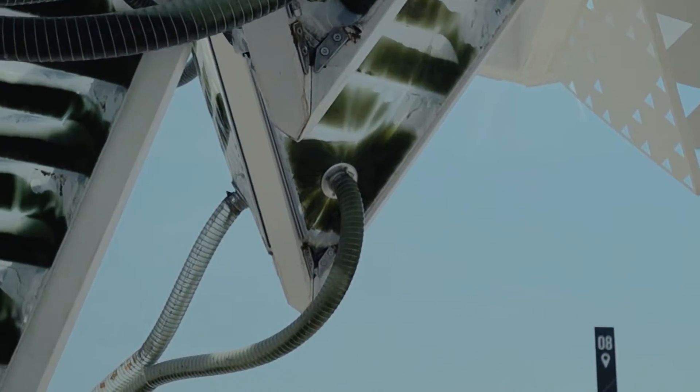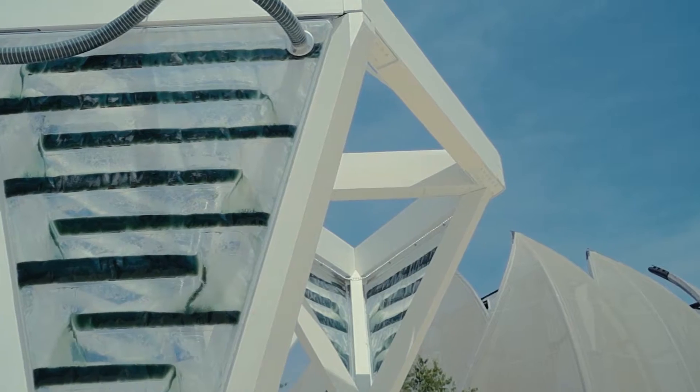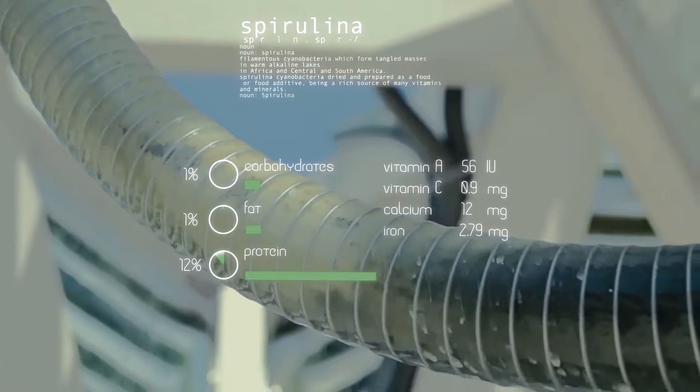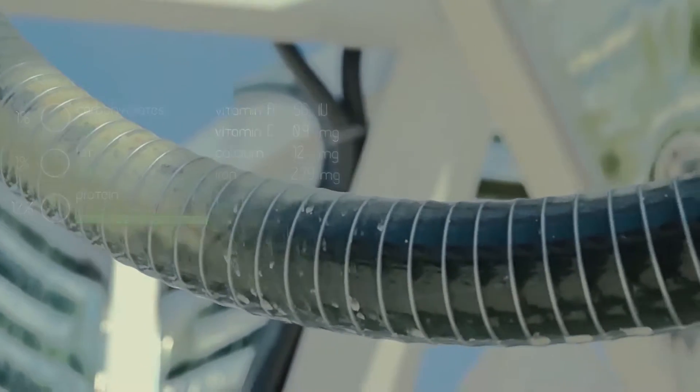The Urban Algae Folly is an interactive pavilion for the urban cultivation of spirulina. It's a built demonstration of architecture's bio-digital future.